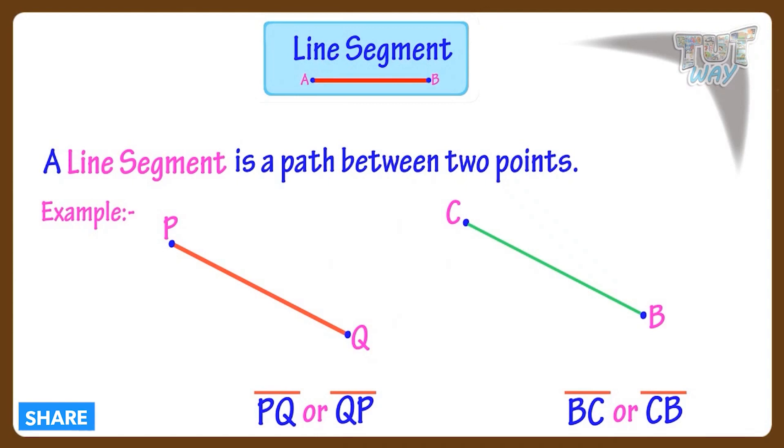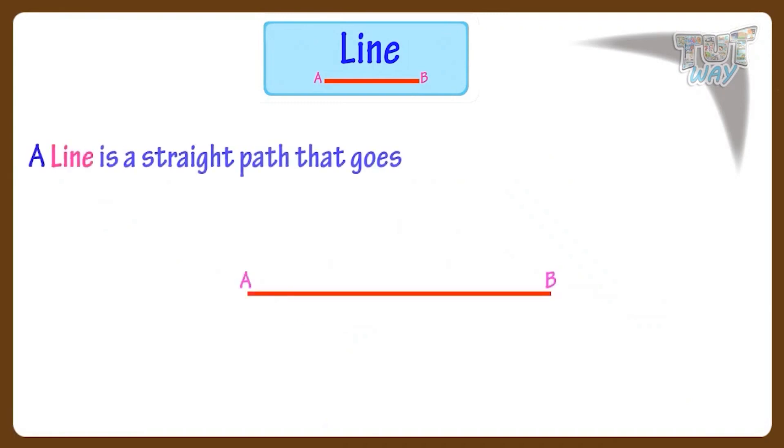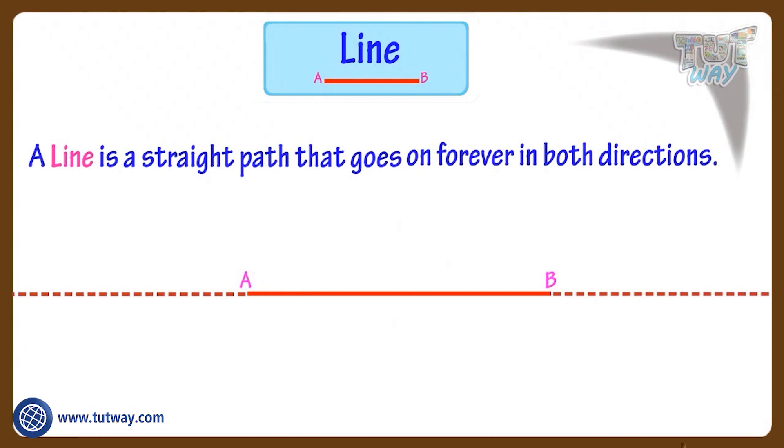Now, let's see what is a line. A line is a straight path that goes on forever in both directions. That is, there is no end point on a line, unlike a line segment.